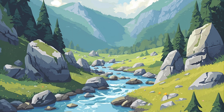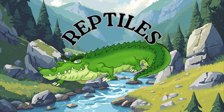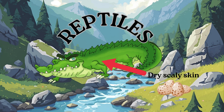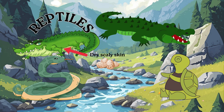Next are the reptiles. Reptiles have dry, scaly skin. They lay eggs, and many of them love warm, sunny places. Snakes, turtles, crocodiles, and lizards are reptiles.